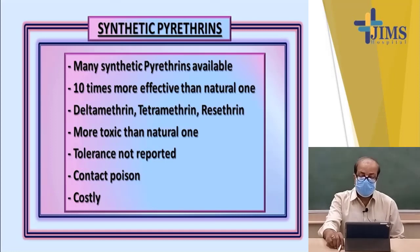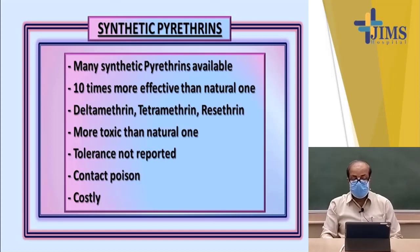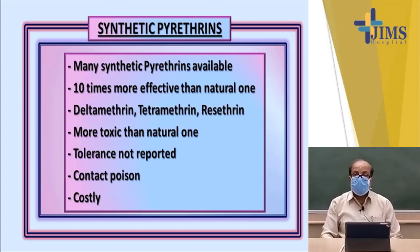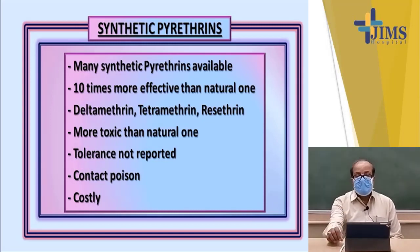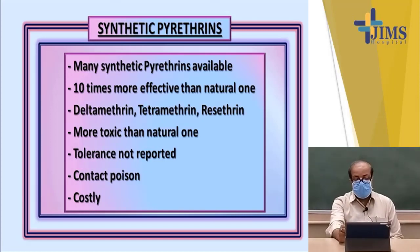Synthetic pyrethroids are also available and are 10 times more effective than natural pyrethrum. Examples include deltamethrin, permethrin, tetramethrin, and resmethrin. They are more toxic and tolerance against them has not been reported by vectors. They are mostly contact poisons. However, they are prohibited by their cost — they are quite costly insecticides.